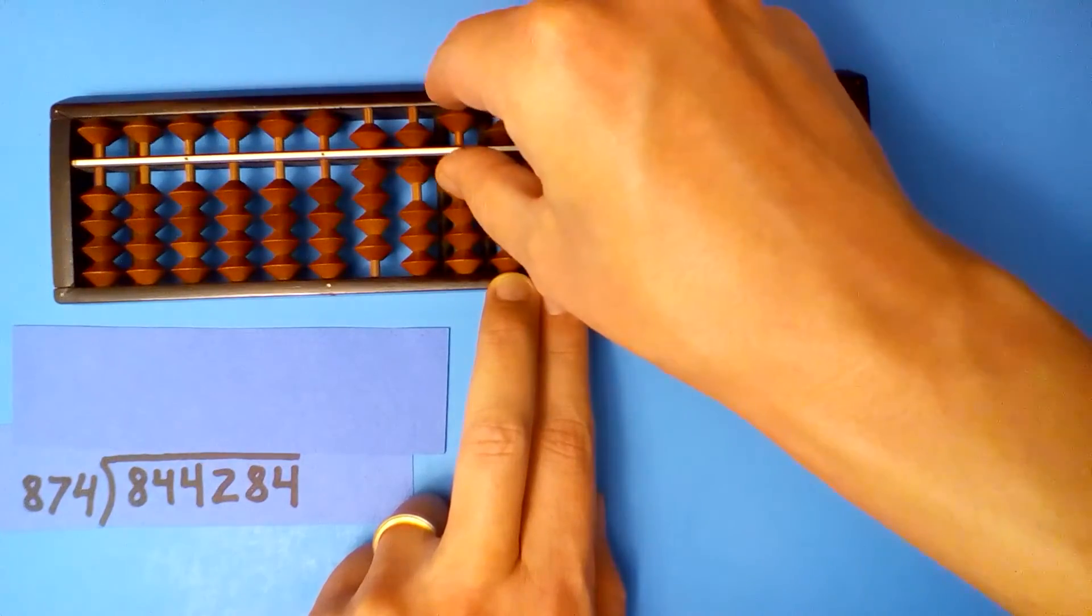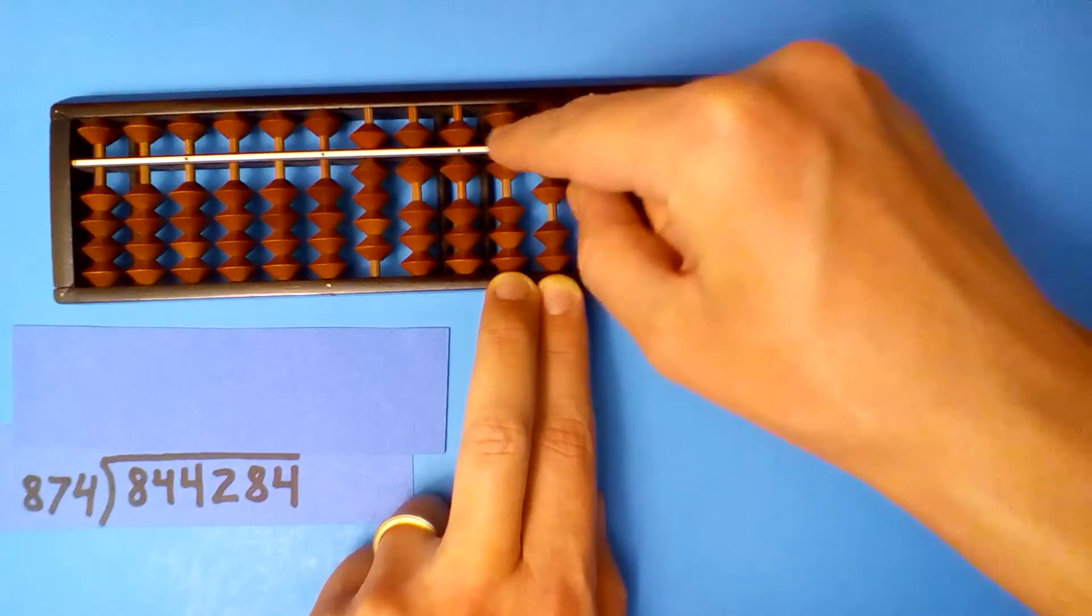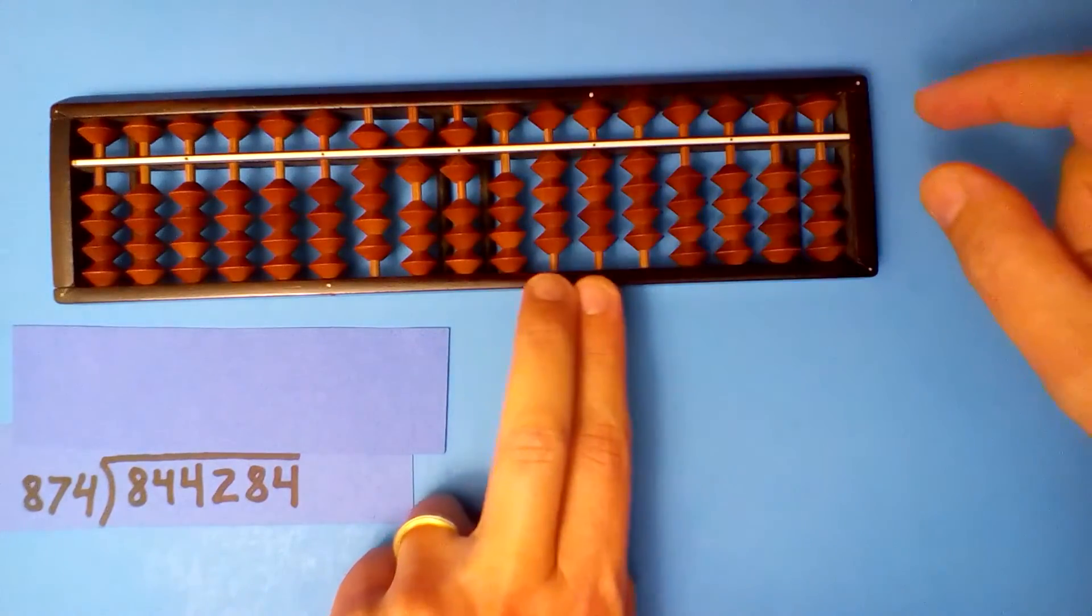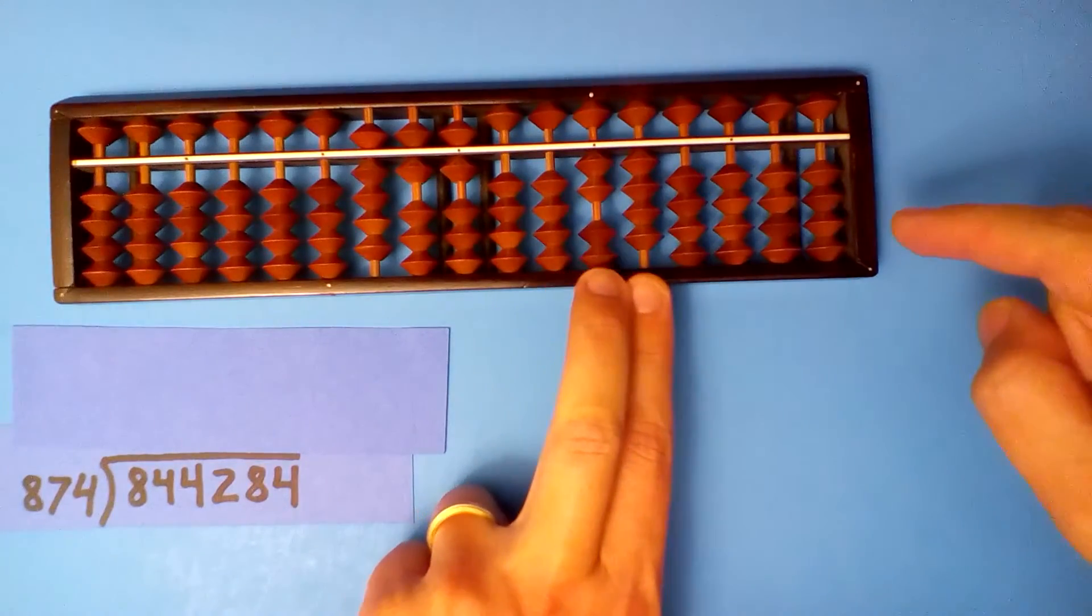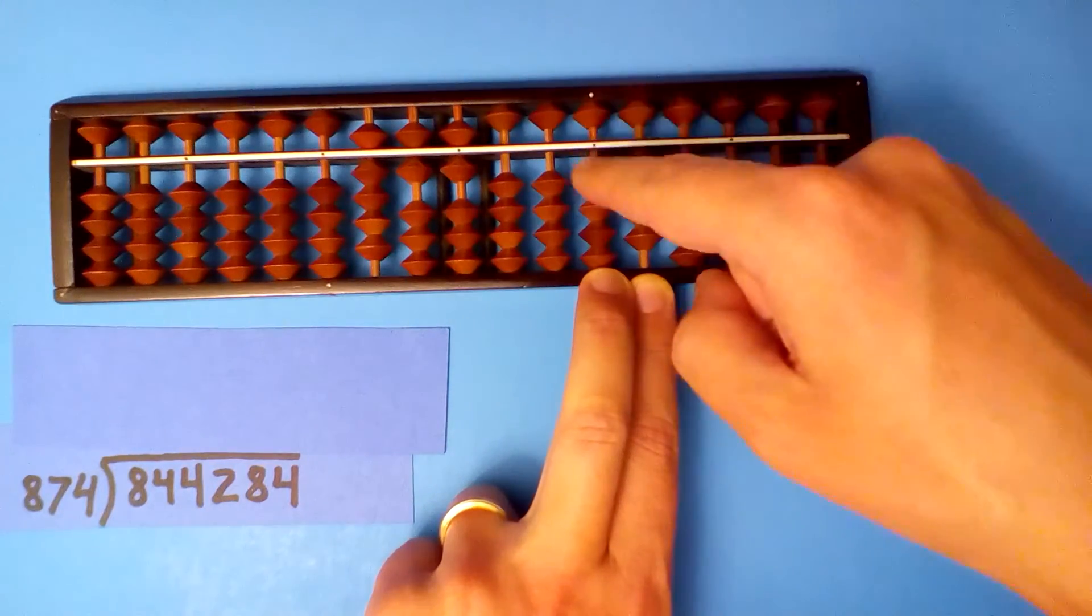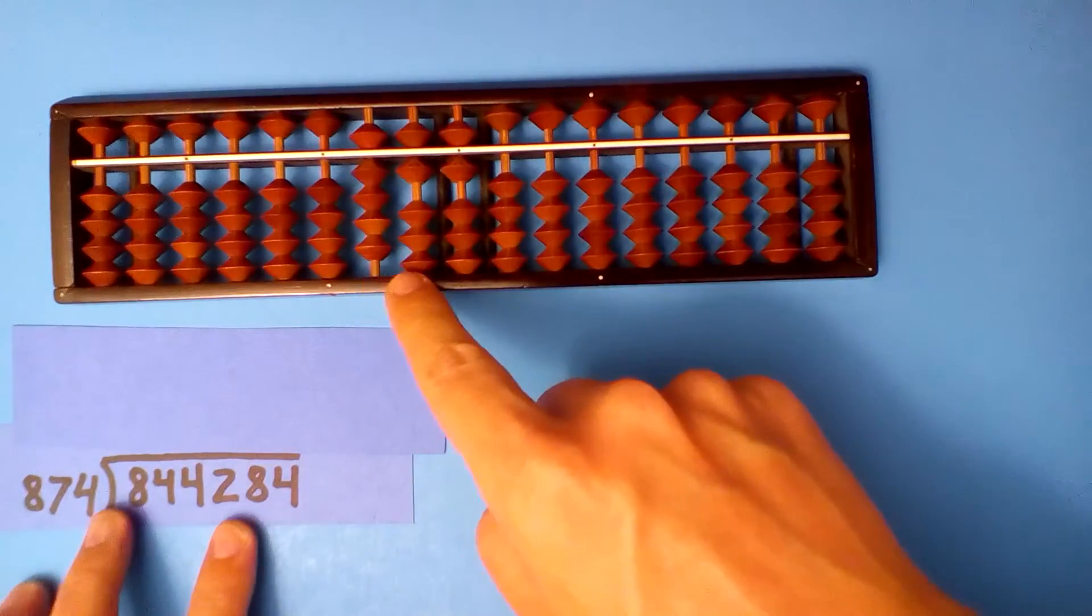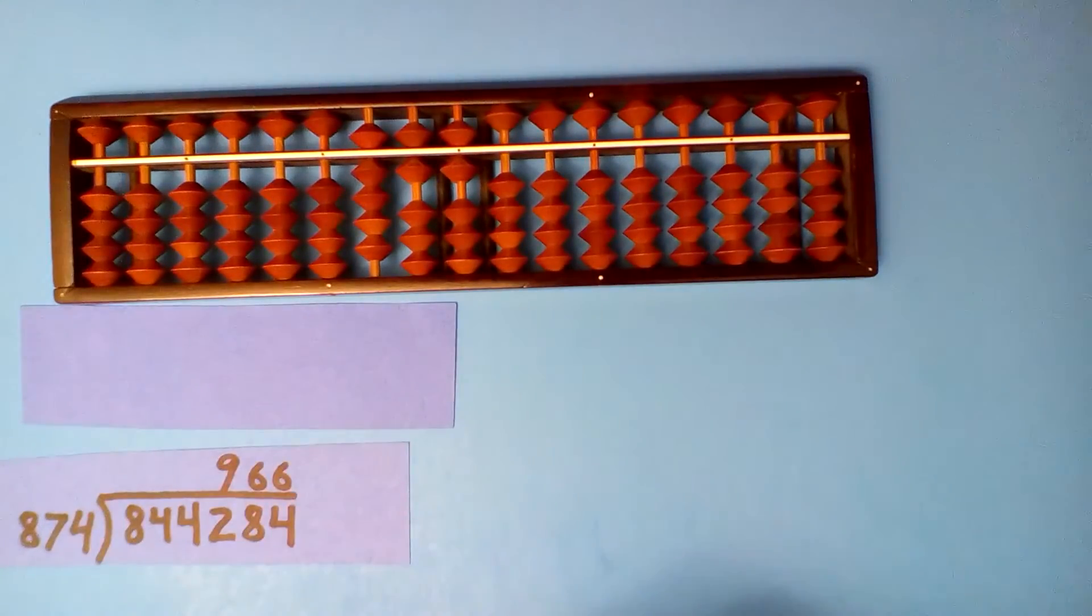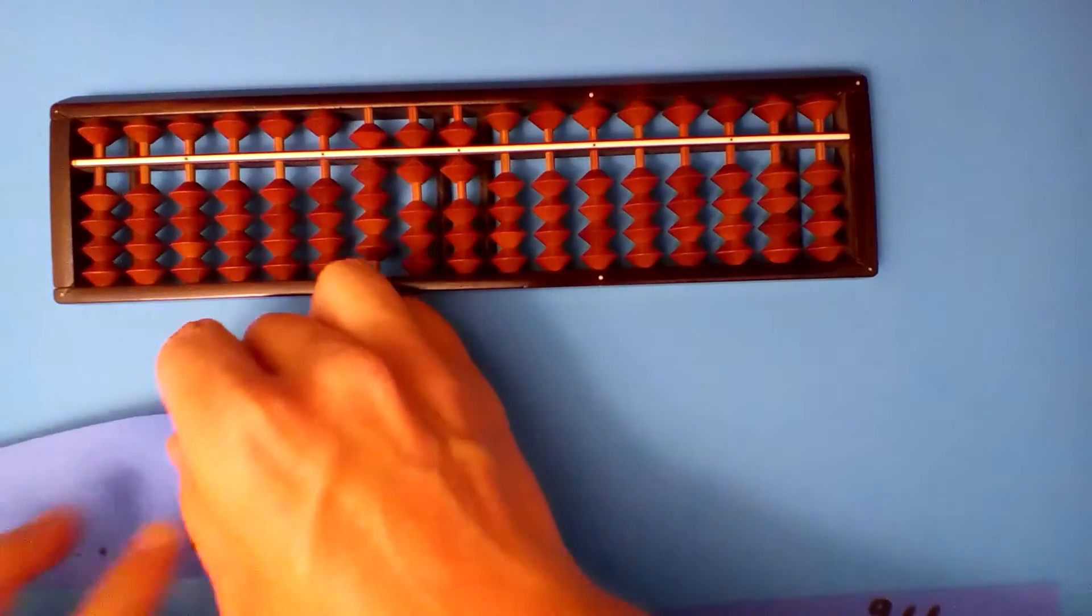8 into 52, six times. 6 times 8 is 48, 6 times 7 is 42, and 6 times 4 is 24. We got it. A quotient of 966.